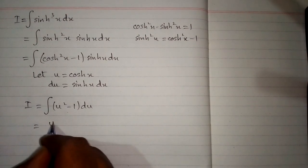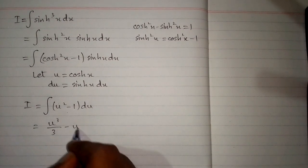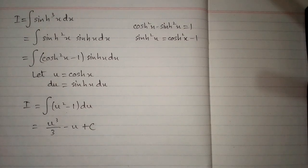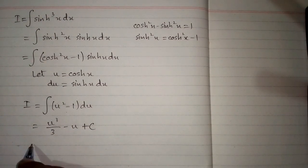So the integral of u square is u cube upon 3 and the integral of 1 is u plus c. Now we will put the value of u so we have...